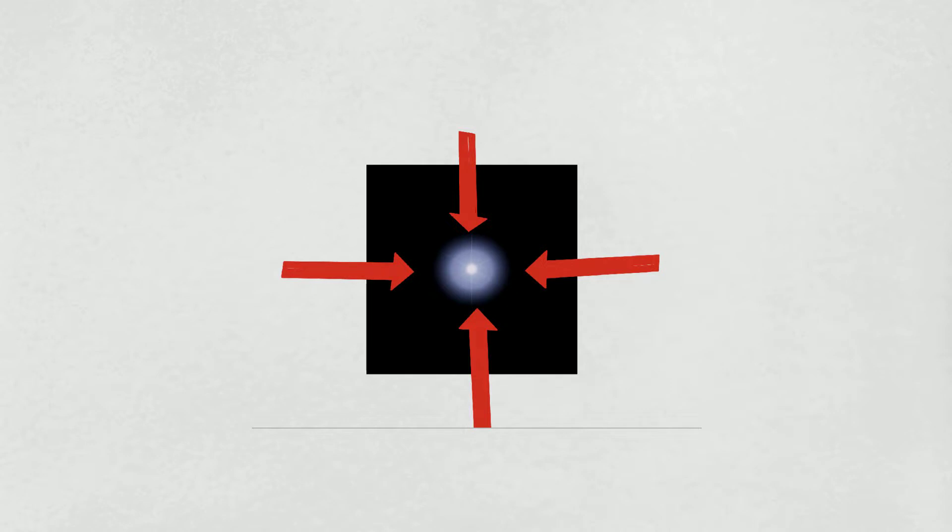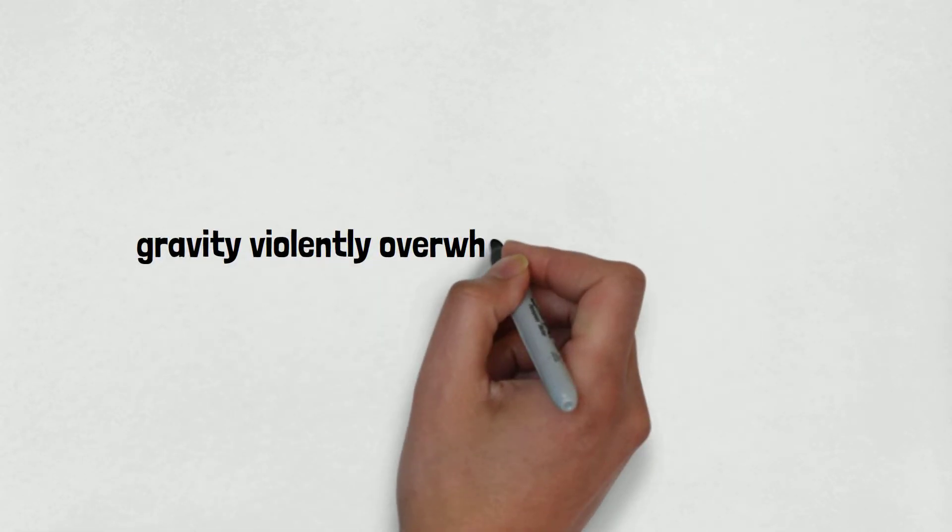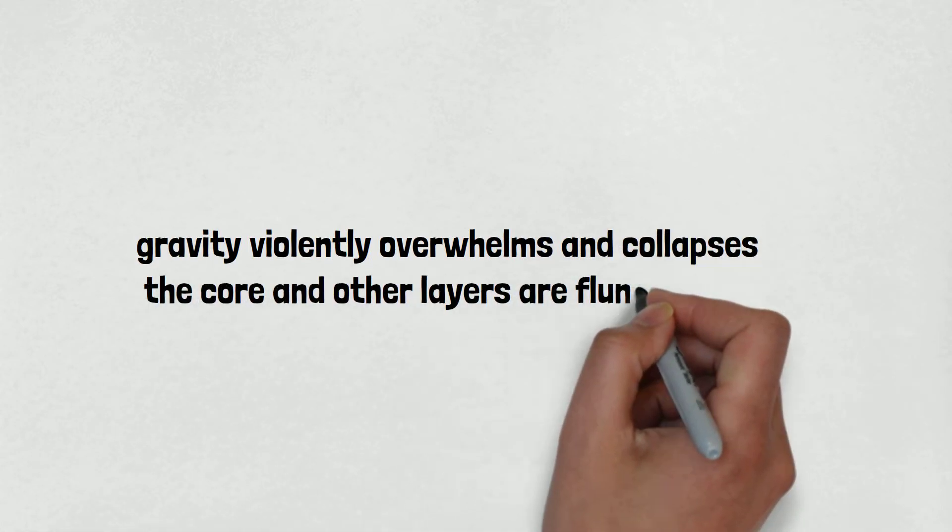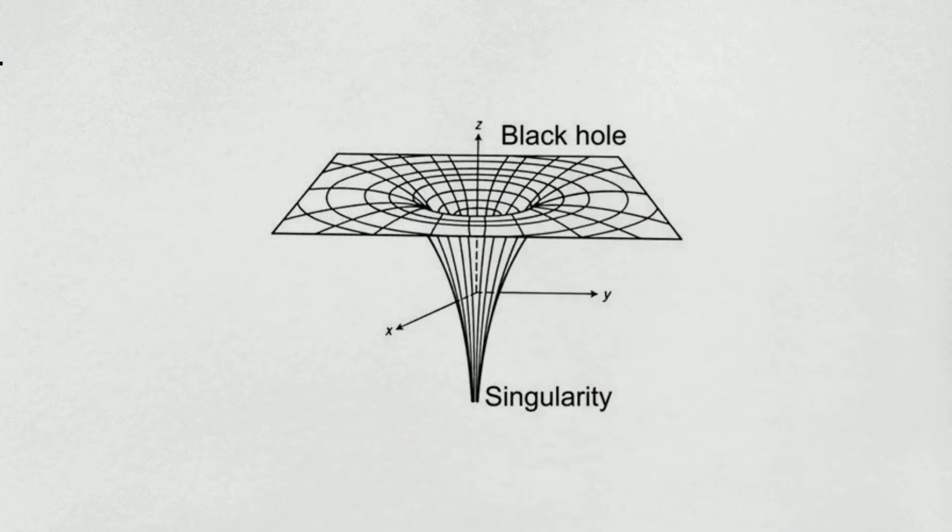When the pressure from nuclear reactions collapses, gravity violently overwhelms and collapses the core, and other layers are flung into space. This is called a supernova. The remaining core collapses into a singularity, a spot of infinite density and almost no volume. That's another name for a black hole.